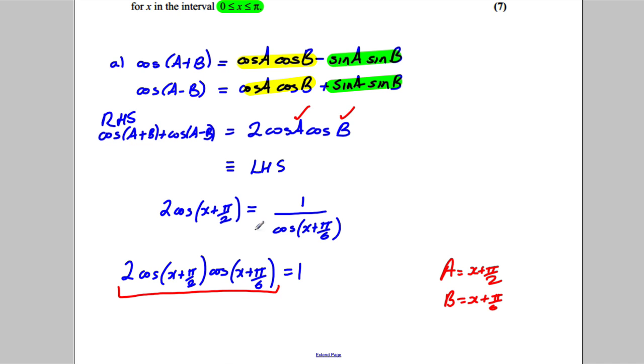So what we could do is we could replace all of this by this here. And what would we get? Well we would get the following. We would get cosine of A add B, what's this add this? If you add those two things together you